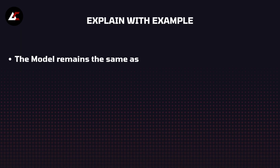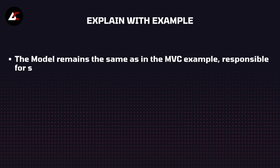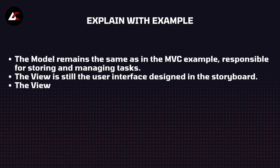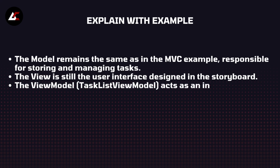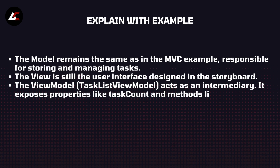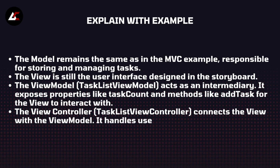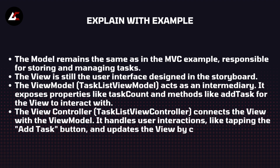According to the live example, the Model remains the same as in the MVC example, responsible for storing and managing tasks. The View is still the user interface designed in the storyboard. The ViewModel acts as the intermediary — it exposes properties like taskCount and methods like addTask for the view to interact with. The TaskListViewController connects the view with the view model, handles user interactions like tapping the addTask button, and updates the view by calling methods on the view model.